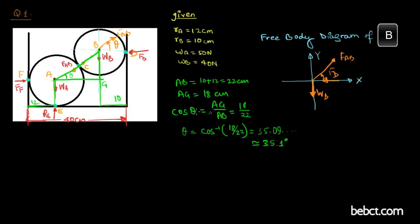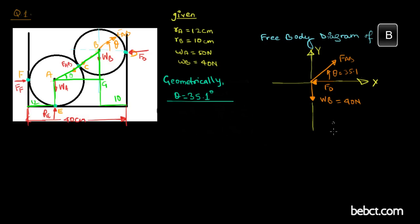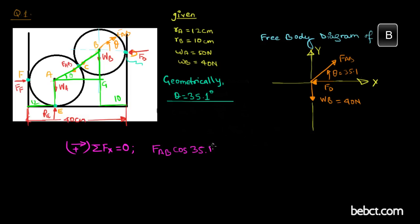Now let's find the reaction forces at points D and C. For the free body diagram of ball B, taking forces in the positive X direction and applying equilibrium: FAB has a component along the X axis equal to FAB cos 35.1 degrees. Since FD is in the negative direction, we set the sum to zero, giving FD equals FAB cos 35.1 degrees — call this relation 1.